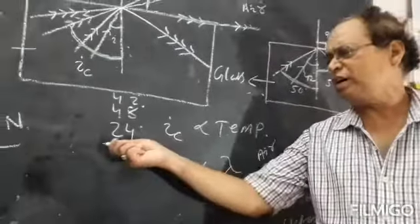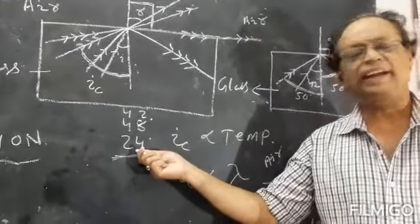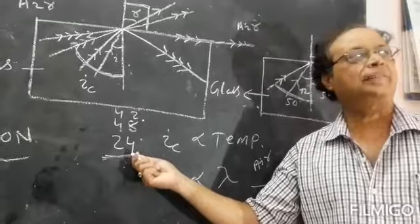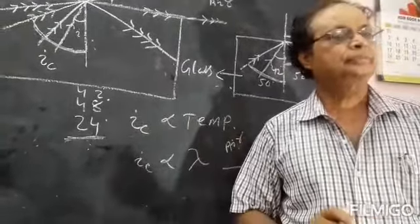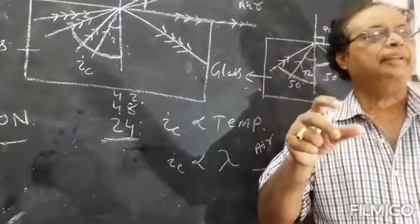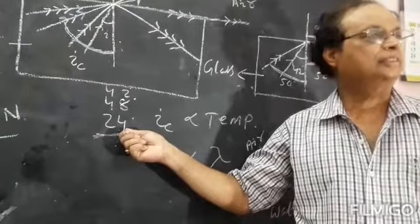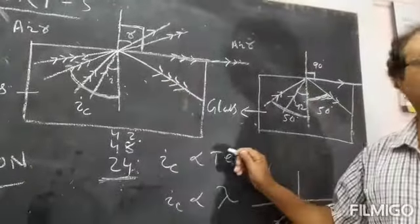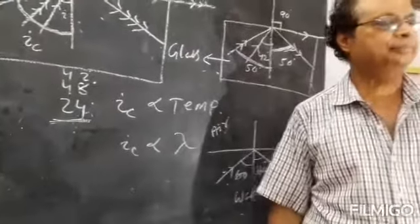For diamond, the critical angle is only 24 degrees — very small. So if light passes from diamond to air with an angle of incidence greater than 24 degrees, total internal reflection takes place and light cannot come out. That is why diamond sparkles. Whatever light enters diamond gets trapped inside due to its low critical angle. Thank you.